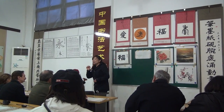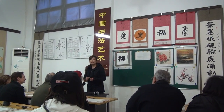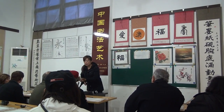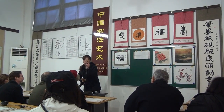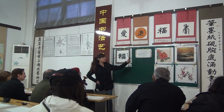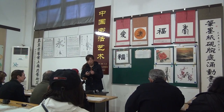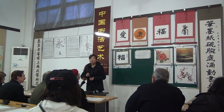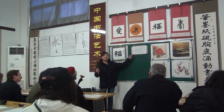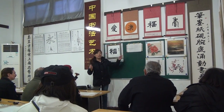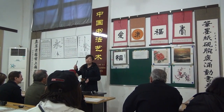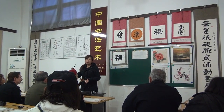So today we are going to learn to write a Chinese character using the brush on the paper. We call it rice paper. Writing with a brush on this paper with ink — we call it Chinese calligraphy. It's different from using a pen or pencil on normal paper.